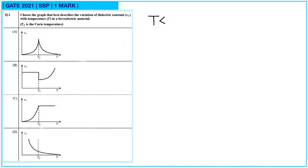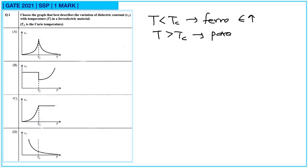When temperature is less than Tc, the material behaves as a ferroelectric material, and when temperature is greater than Tc, it behaves as a paraelectric material. For ferroelectric material, the dielectric constant initially increases until it reaches the critical temperature Tc, because of increasing polarization from easy orientation of dipoles. Above Tc, increased thermal energy causes disorder, resulting in a decrease of dielectric constant.